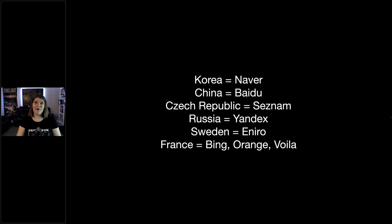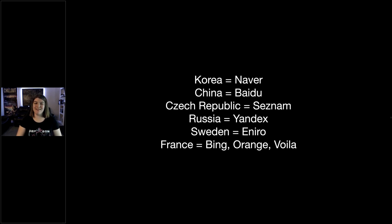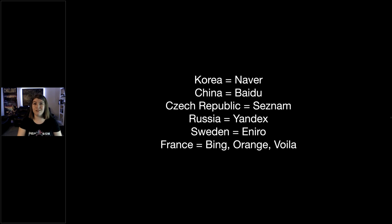Every country has their own kind of default search engine, which is crazy. Knowing that there are so many different search engines with a preference over Google is just a lot to comprehend. Really, Google is used in Australia, New Zealand, and all of North America. But outside those regions, there are so many other search engines that are actually preferred. In the UK and EU region, the preference is Yahoo. Korea uses Naver. China uses Baidu. Czech Republic uses Cessna. Russia uses Yandex. Sweden uses Iro. France has Bing, Orange, and Vroela.